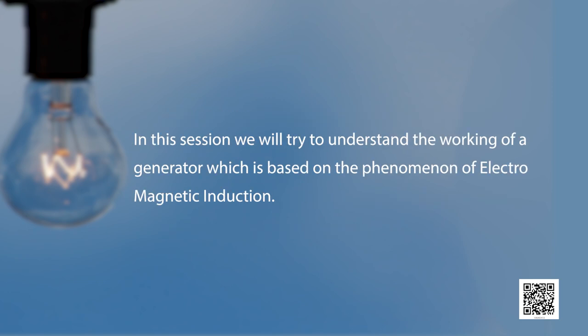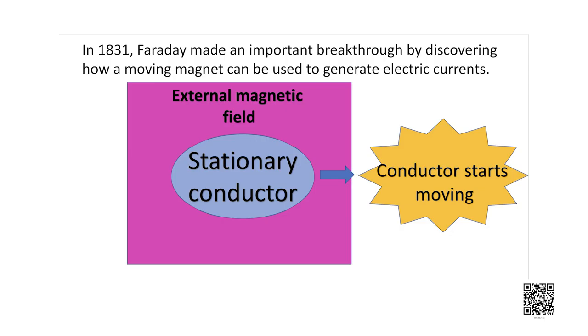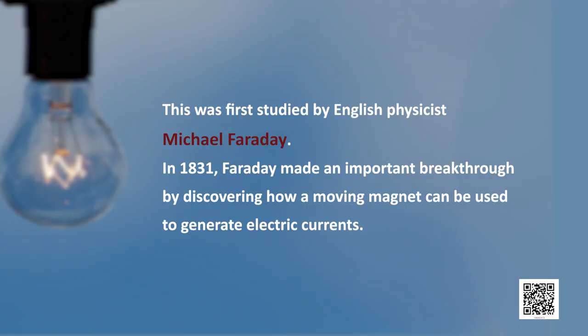In this session we will try to understand the working of a generator which is based on the phenomena of electromagnetic induction. Now let us imagine a situation in which a conductor is moving inside a magnetic field or a magnetic field is changing around a fixed conductor. What will happen? You will be surprised to know that a current is generated.